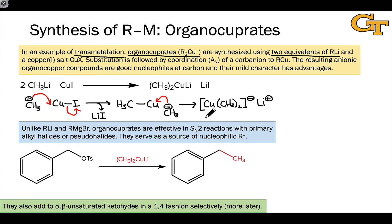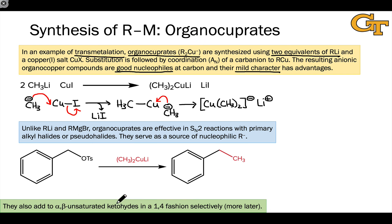Organocuprates are unique because of copper's relatively low electropositivity. They're good nucleophiles at carbon, but extremely mild, and can do certain things that more reactive organometallics cannot. For example, organolithiums and Grignard reagents generally don't engage in SN2 reactions with primary alkyl halides — they do elimination instead — but organocuprates can be used for straightforward SN2 reactions to form carbon-carbon bonds. Additionally, organocuprates don't add directly to the carbonyl carbons of alpha-beta-unsaturated ketones and aldehydes; instead, they add in a conjugate or 1,4 fashion. We'll see more on this later in the course.